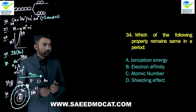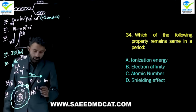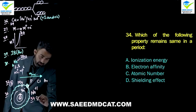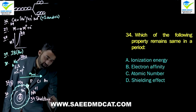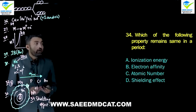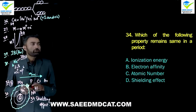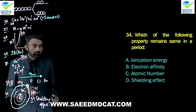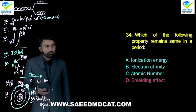Question 34: Which property remains the same in a period? Within a period, the intervening electrons (inner shells) remain the same, so the shielding effect also remains the same. Ionization energy increases, electron affinity increases, atomic number increases — but shielding effect remains constant. Delta option: shielding effect.